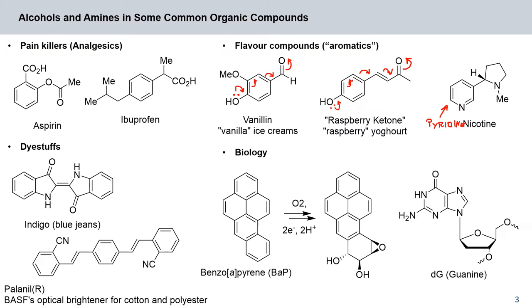Then we have dye stuffs, like for example, dye of blue jeans indigo. In fact, this is present in 25% of all jeans. So here again our nitrogen lone pair contributes to delocalization across this molecule. So here at the bottom left hand corner, palanil, BASF's optical brightener for cotton and polyester. Here you have a conjugated system that runs through the whole molecule and you will also find these functionalities have a great importance in biological processes. So for example, here we have benzo A-pyrene or BAP for short. BAP is a procarcinogen. It means it becomes a carcinogenic compound after enzymatic metabolism.